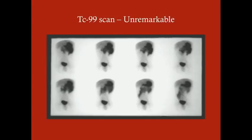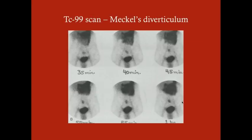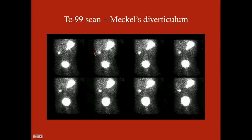Here's a technetium-99 scan — on a normal scan, the substance concentrates in the stomach and bladder over time, with a little in the intestines. That's where it should be, because you have gastric mucosa in the stomach and the substance pools in the bladder after elimination. On this scan showing Meckel's diverticulum, in addition to the stomach, you see this small dot here — that's your Meckel's diverticulum. Here's another one with colors reversed — the Meckel's diverticulum is clearly visible.